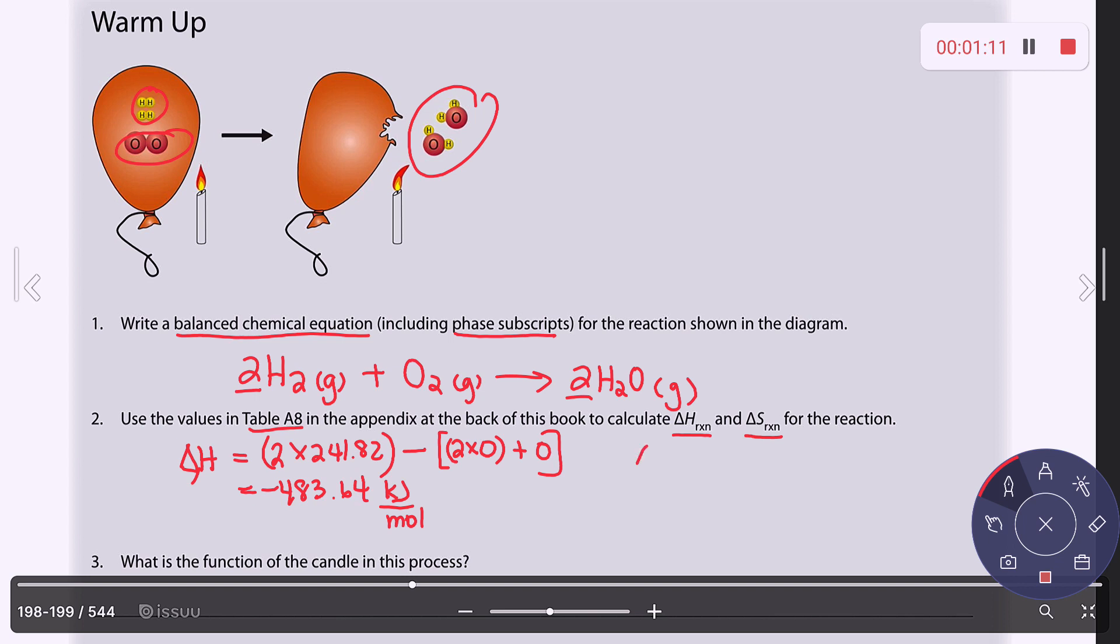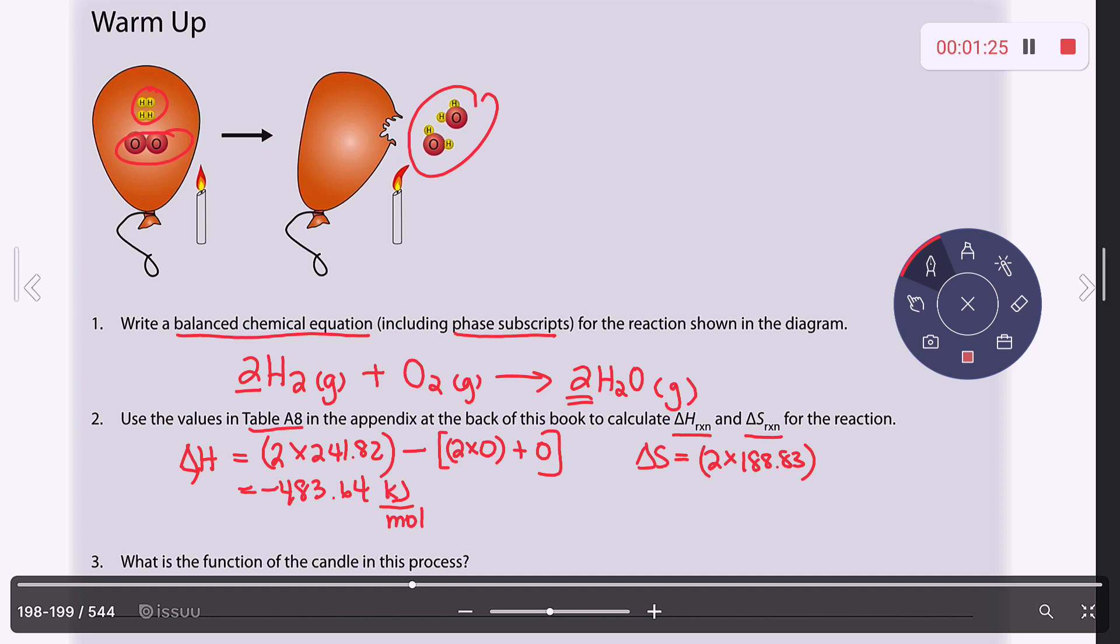Then for the change in entropy, we're going to follow the same thing. I've got two waters, so it's 2 times 188. So there's my product and then minus the reactants. So this is going to be 2 times 130 for the H2 plus 205.14 for the O2. And your delta S will be negative 88.84 kilojoules per mole.